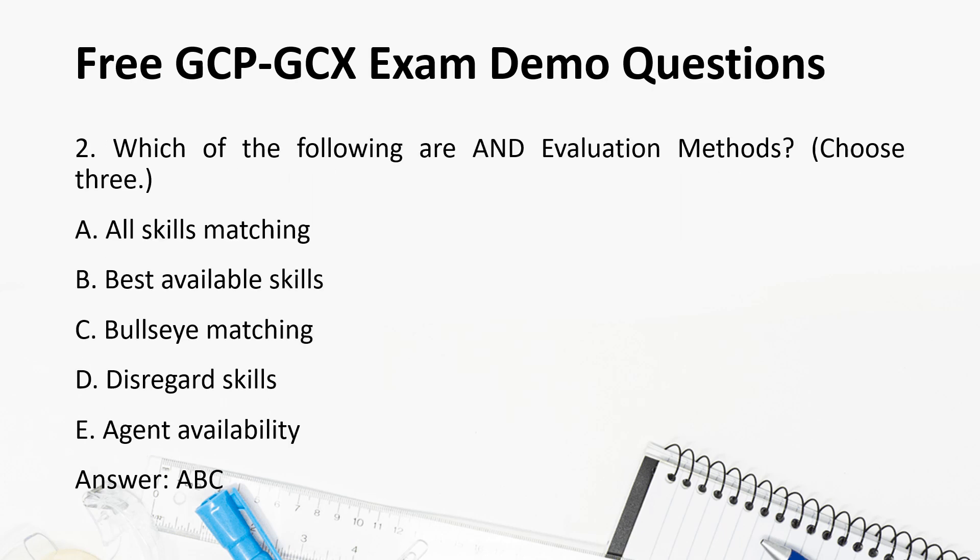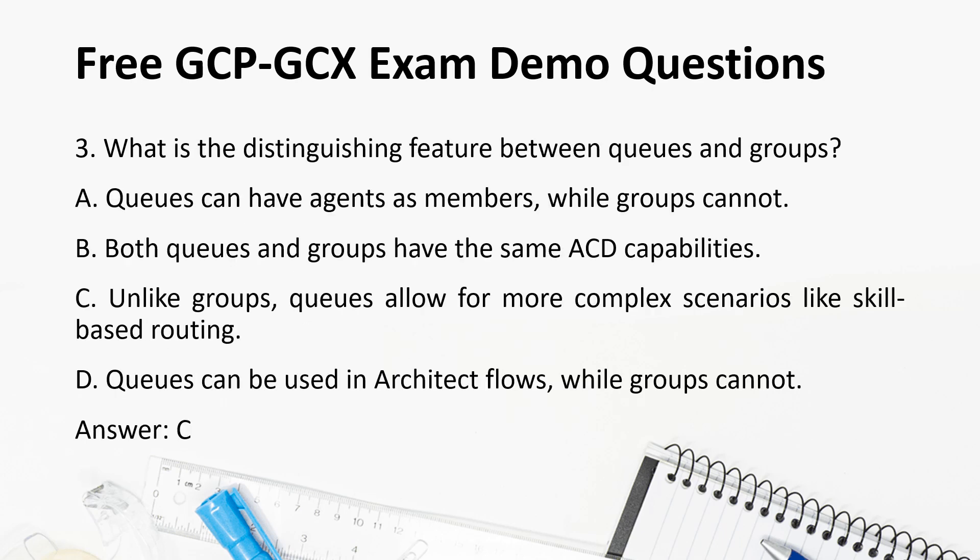Question 2: Which of the following are evaluation methods? Choose 3. a. All skills matching, b. Best available skills, c. Bullseye matching, d. Disregard skills, e. Agent availability. Answer: a, b, c.